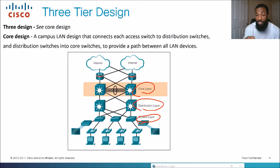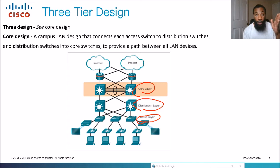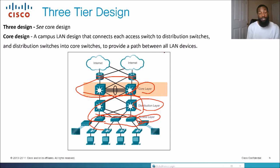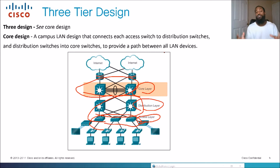This is the access layer, distribution layer, and core layer — also known as Cisco's three-tier hierarchy design or best-practices design. In the official cert guide, the three-tier or 'core design' is defined as a campus LAN design that connects access switches to distribution switches and distribution switches to core switches, providing a path between all LAN devices. It's like roads and highways — creating multiple paths to create redundancy so there are still ways to reach the internet.